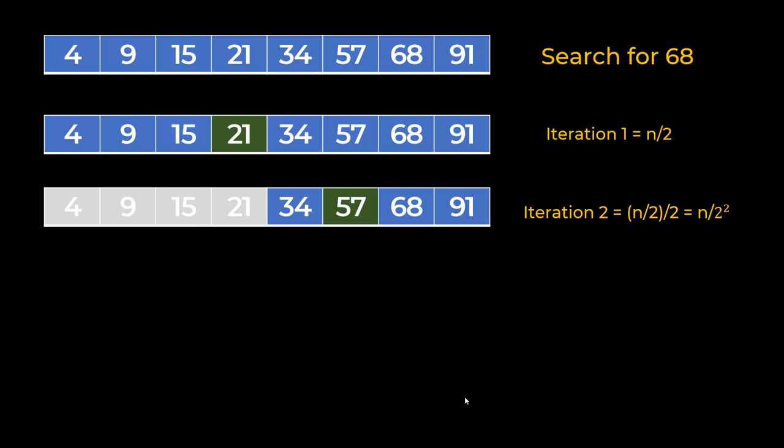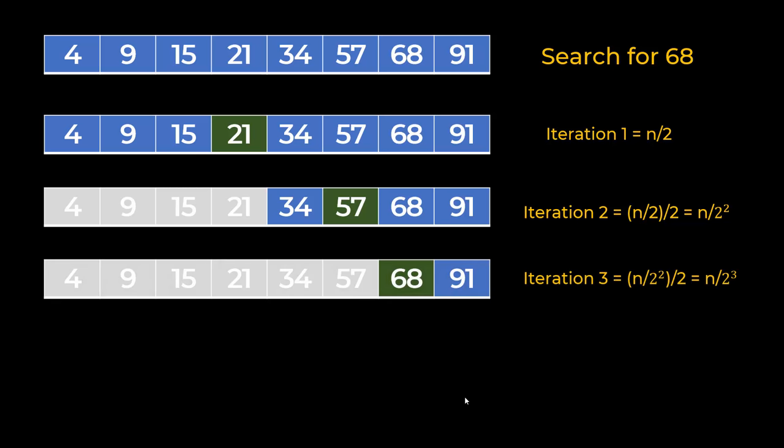Here the middle element is 57. Again compare it with 68. 57 is less than 68, hence you discard the left hand side array which is 34 and 57. You now have only 68 and 91 in your search space. Again you divide it by 2, you take the middle element which is 68, and 68 is the element you were looking for. So you found your answer in 3 iterations.